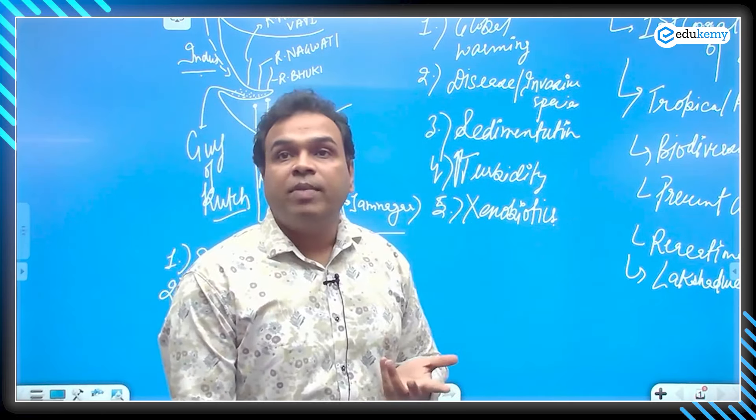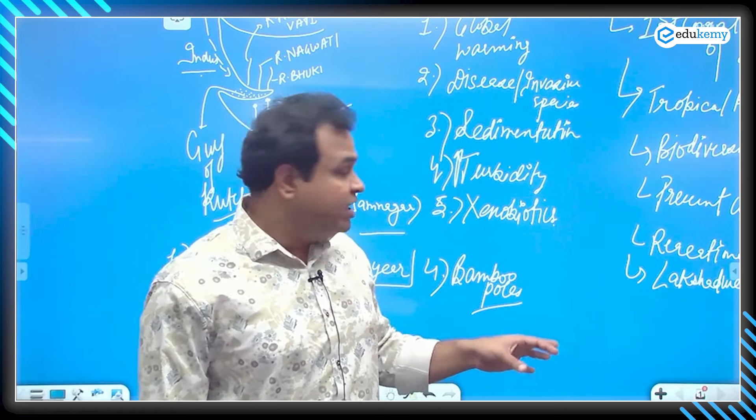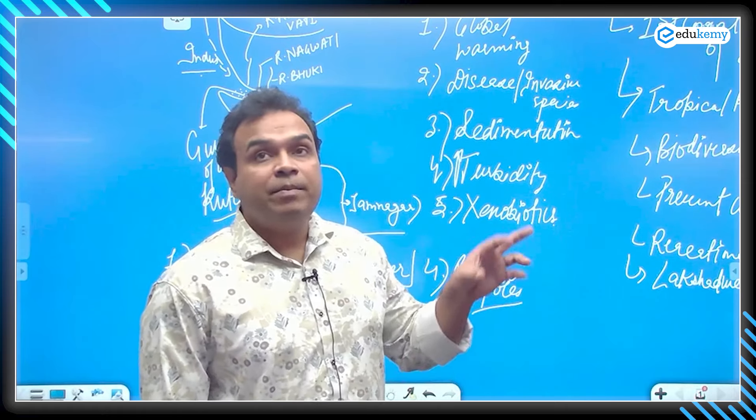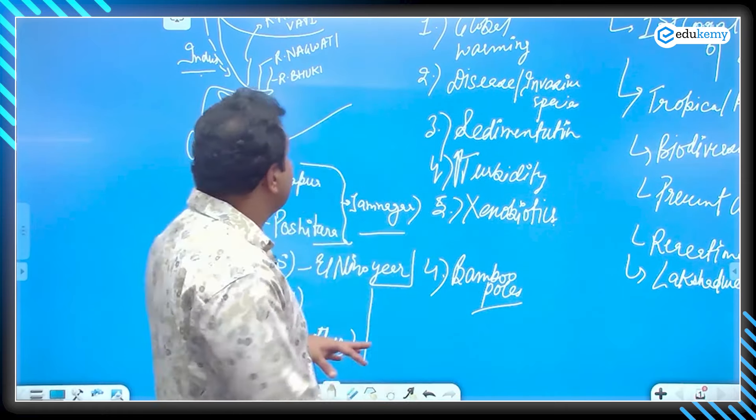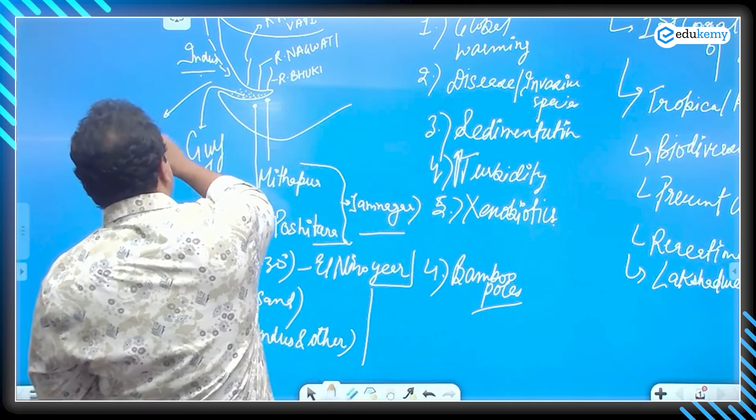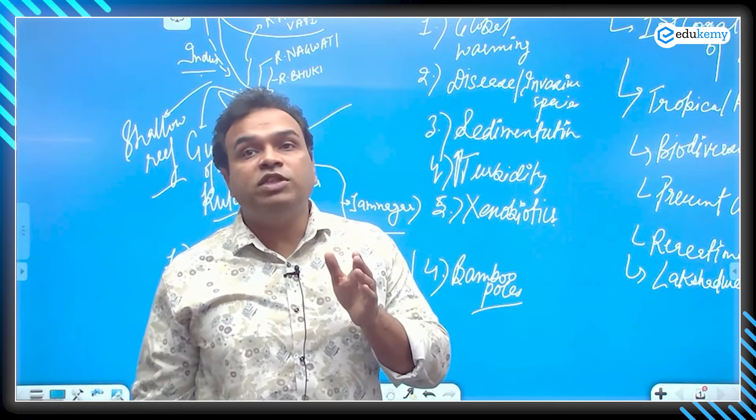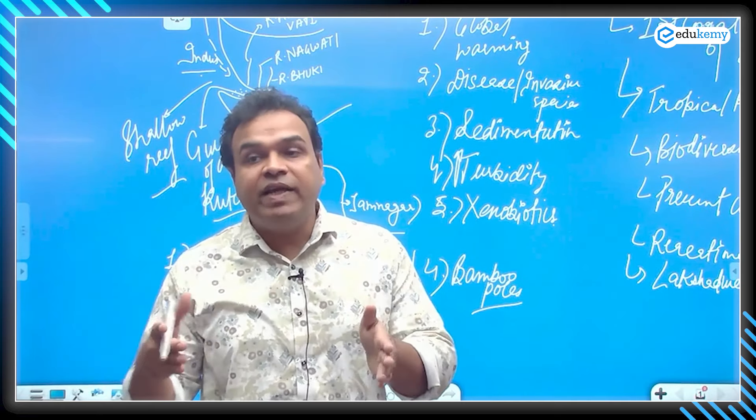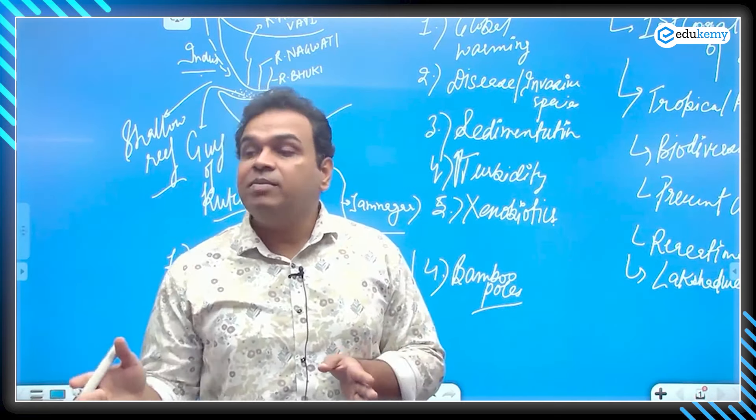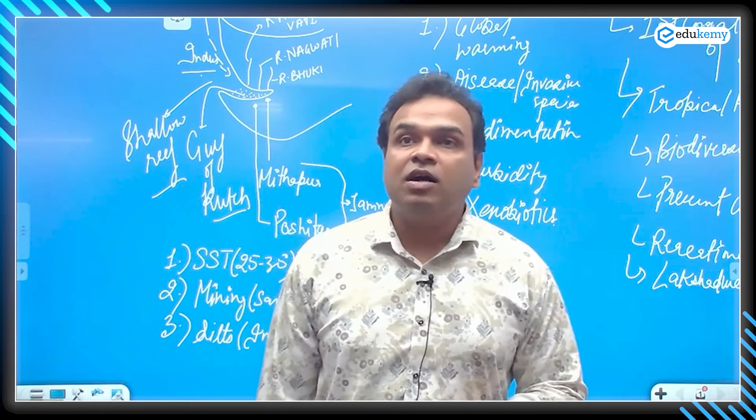The fourth point is that the locals here are using bamboo poles. Bamboo poles are used to anchor the boats in these regions. And this Mithapur coral reef is a shallow reef. Because it is a shallow reef, the bamboo poles they have been using while boating or while anchoring the boats, it sometimes hits the corals that are below the sea. As the bamboo poles hit the coral, corals get overturned and it affects the corals also.